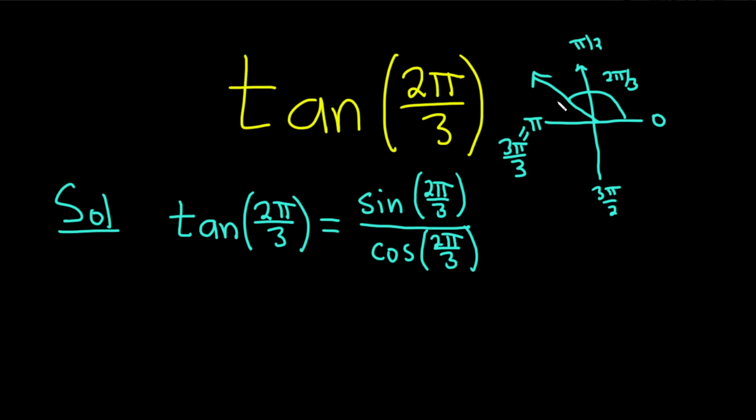And now we can find the reference angle. So the reference angle is the angle made by the terminal side of our angle, 2π over 3, and the x-axis. It's the positive angle that's created there. And you can see here from the picture that this angle is π over 3 because 3π over 3 minus 2π over 3 is π over 3. So you want to find the reference angle, and you do that by drawing a picture. It's really important to draw the picture.